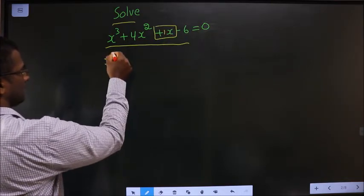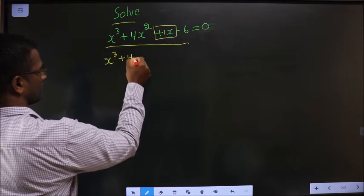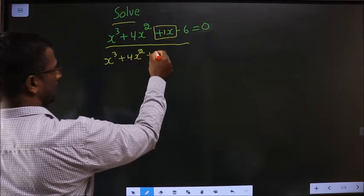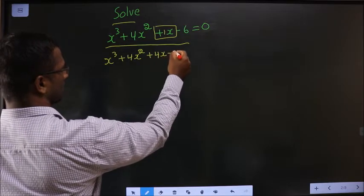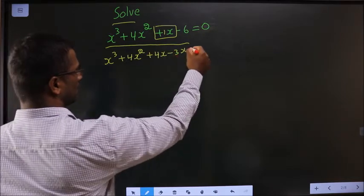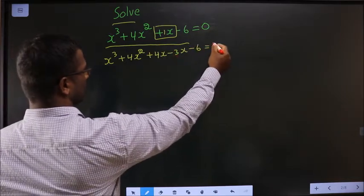Now how do I change? Instead of plus 1x I will be writing plus 4x minus 3x. Accepted right? Plus 4 minus 3 is plus 1. Minus 6 equal to 0.